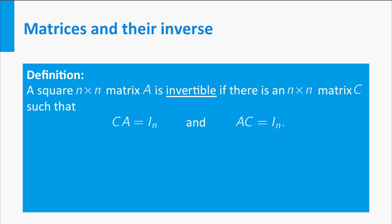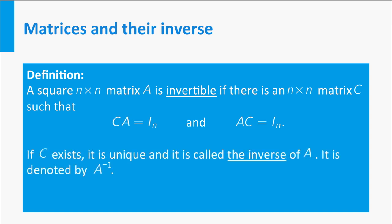For square matrices we take the same approach as for numbers. A square n by n matrix A is called invertible if there is an n by n matrix C, such that C times A equals I_n and A times C equals I_n. If C exists, it is unique, so we can call C the inverse of A and denote this by A to the power minus 1, just like for the numbers.